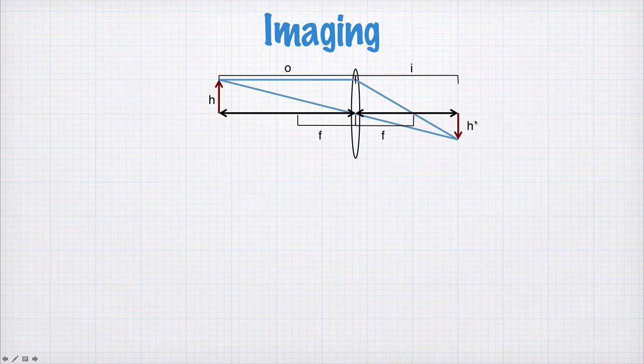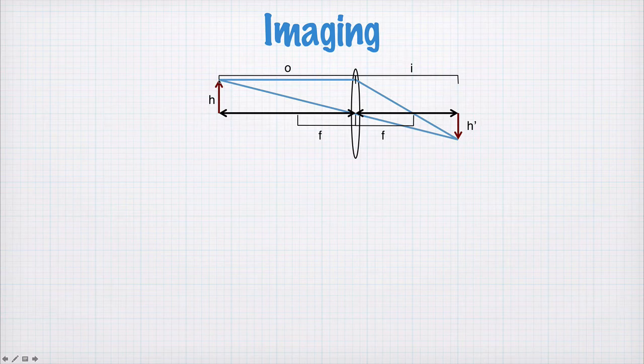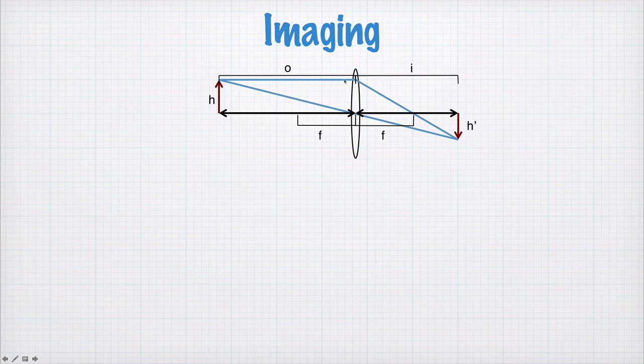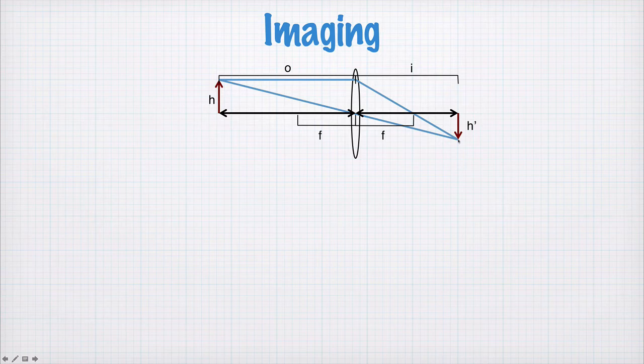To figure out where the image is formed, we take some point on the object. Let's take the top of the object here. We trace one ray that goes straight through the middle of the lens and continue it out here. And another one that goes parallel to the optical axis, hits the lens, goes through the focal point. And where those two rays intersect, that's where the image will form.